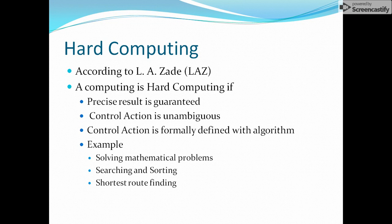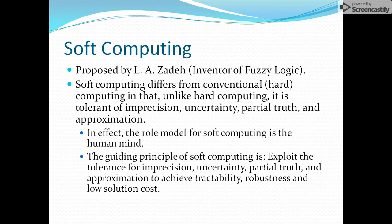For example, with bubble sorting there is no other procedure or algorithm that works the same way — it is unambiguous. The result will be precise and guaranteed. Now, what is soft computing? It was proposed by L.A. Zadeh, who was the inventor of fuzzy logic.